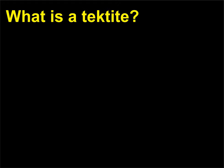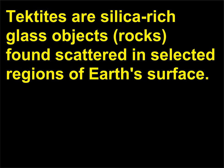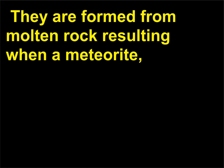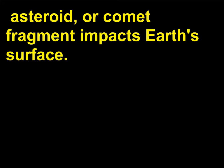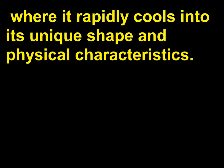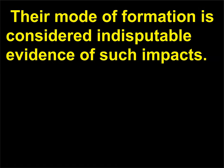What is a tektite? Tektites are silica-rich glass objects found scattered in selected regions of Earth's surface. They are generally black, oblong, teardrop, or dumbbell-shaped, and several centimeters in length. They are formed from molten rock resulting when a meteorite, asteroid, or comet fragment impacts Earth's surface. The molten rock is hurled high into the atmosphere, where it rapidly cools into its unique shape and physical characteristics. Their mode of formation is considered indisputable evidence of such impacts. Tektites range from 0.7 to 35 million years in age.